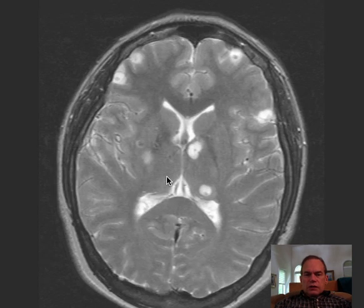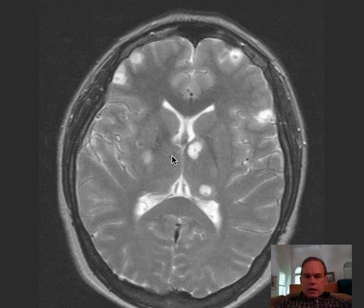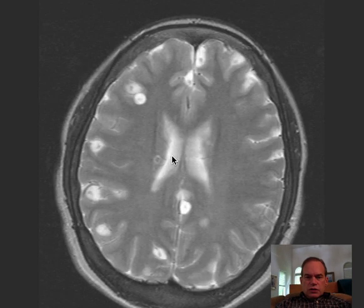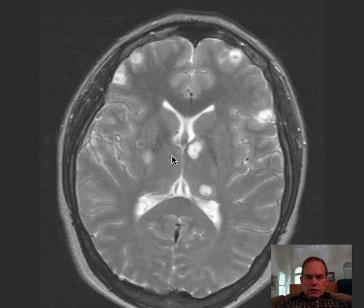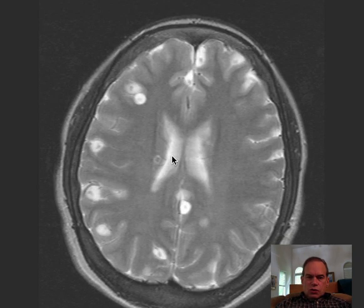Here we see a number of these lesions. These can cause seizures, which is the most common presentation. Headaches are also possible. We can see that the locations of these lesions are quite diverse, and a lot of them seem to be in cortical sulci.